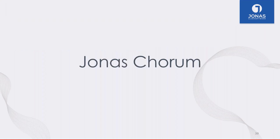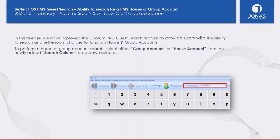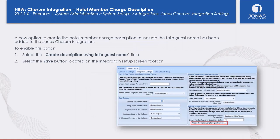Moving on to Jonas Quorum, our PMS integration for hotel rooms and cottages. In this release, we've added to the Point of Sale member lookup screen the ability to select either a group account or a house account from the Quorum PMS system. You'll find this in a new dropdown called Search Column. We also enhanced the guest folio name description — when members allow a guest to use their account to stay at a hotel room, you can now turn on a flag to create the description using the folio guest name, sending the guest name along with the charge description to the member account.